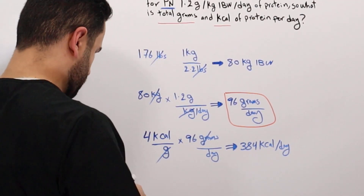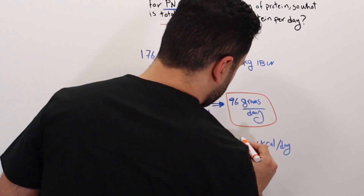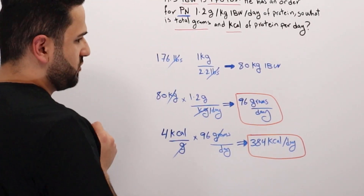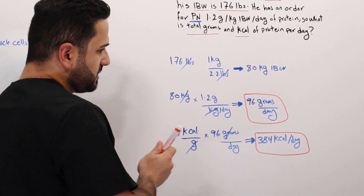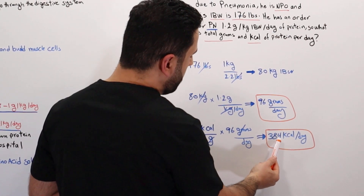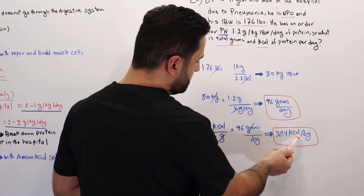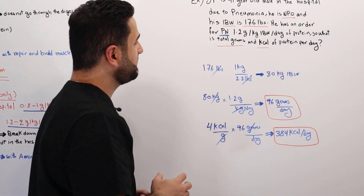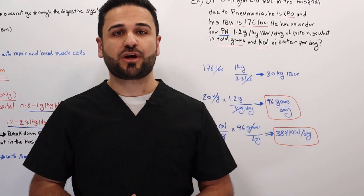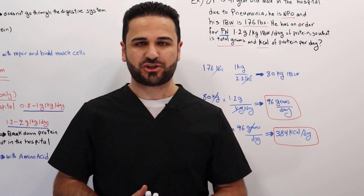So the required amount is 96 grams per day, and the required calories per the order is 384 kcal per day. This is it for this lecture. If you have any questions or comments, please leave them in the comments below. And as always, thank you for watching.